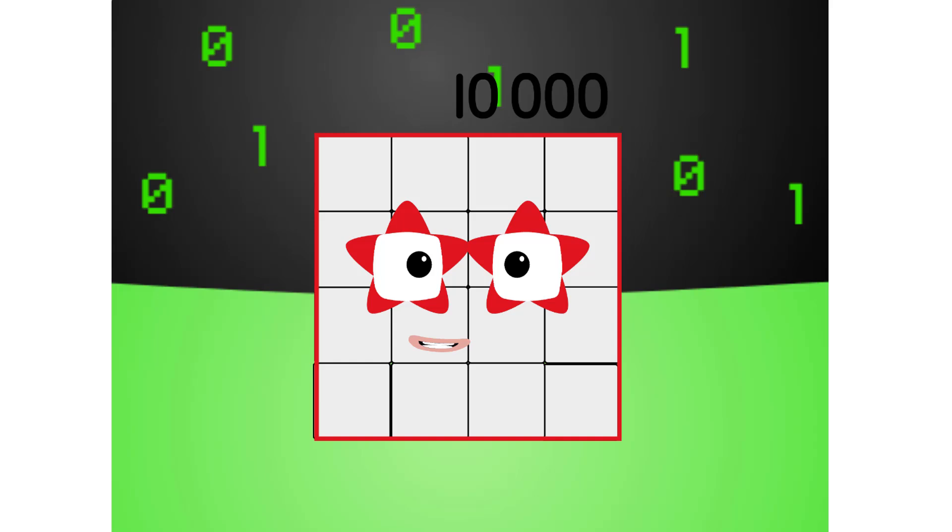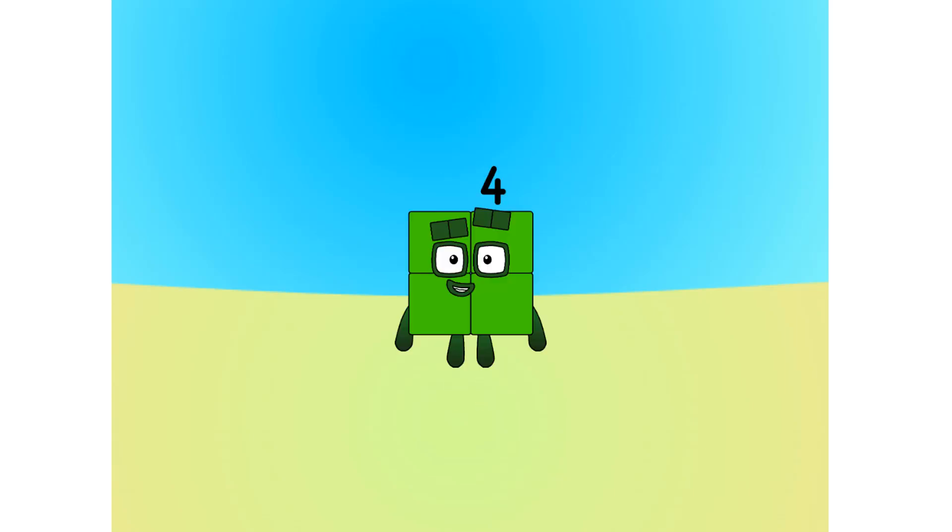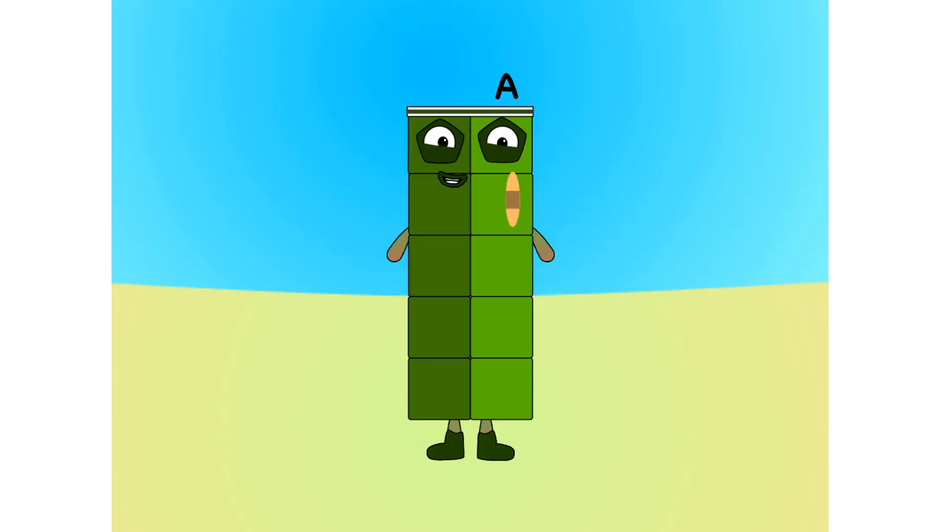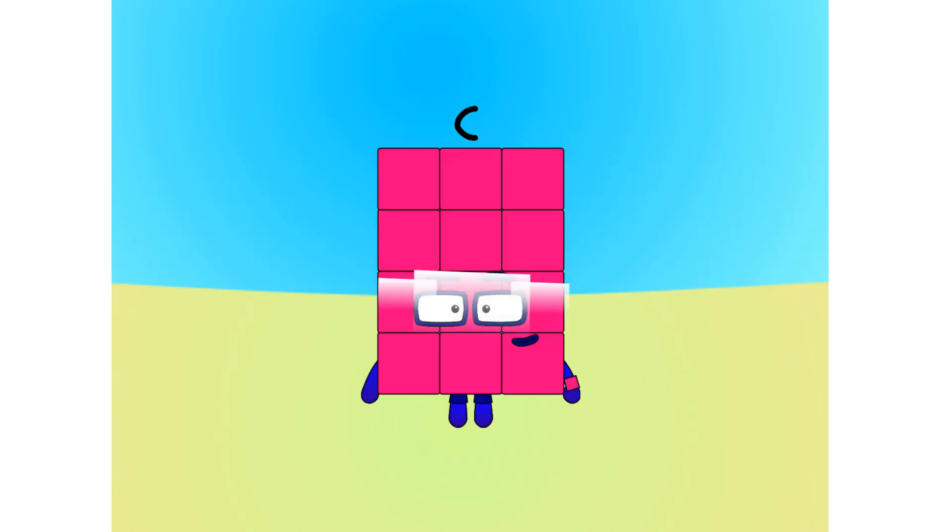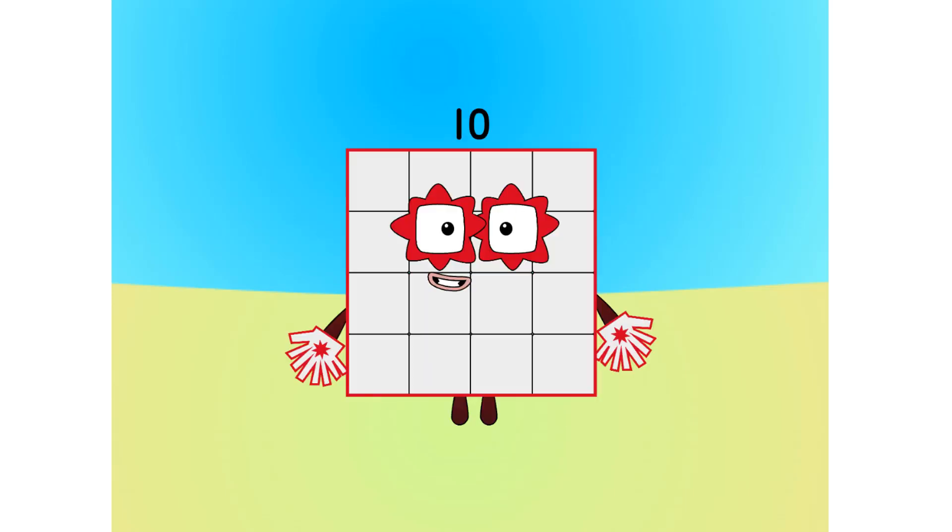Let's move on to the next base. This is base 16, also known as hexadecimal or hex. If this is base 16, there needs to be 16 digits. 1, 2, 3, 4, 5, 6, 7, 8, 9, A, B, C, D, E, F, 10.